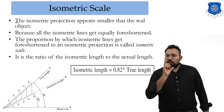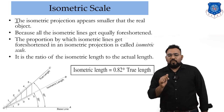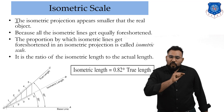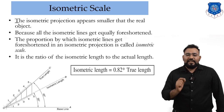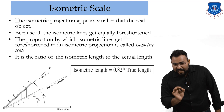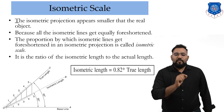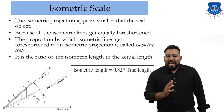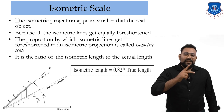To derive the isometric length, draw another line at 30 degrees to the baseline — this is line OB, which will be known as the isometric length. Now, from point 5 on line OC draw a vertically downward line; where it intersects OB, that becomes point 5 on the isometric length. Do the same for points 4, 3, 2, and 1 on the true length, projecting vertically downward to intersect OB.